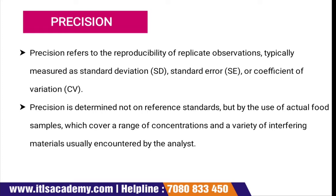Then comes precision. Precision refers to the reproducibility of replicate observations, typically measured as standard deviation (SD), standard error (SE), or coefficient of variation (CV). Precision is determined not only on reference standards but also using actual food samples which cover a range of concentrations and a variety of interfering materials usually encountered by the analyst.